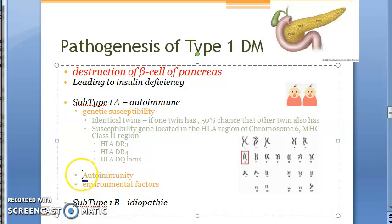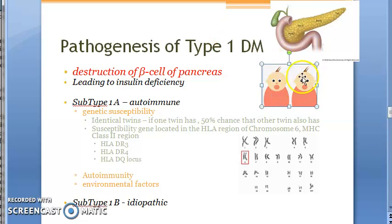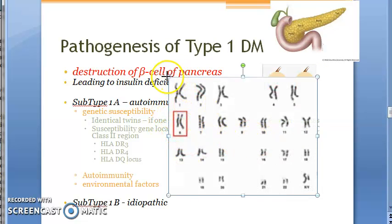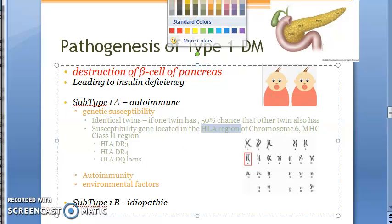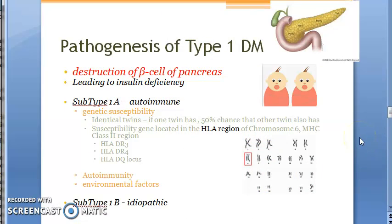For subtype 1a, there are three things: genetic susceptibility, autoimmunity, and environmental factors. Regarding genetic susceptibility — with identical twins, if one twin has type 1 diabetes mellitus, the other has a 50% chance of also having it. Chromosome 6 has the HLA region, which contains the MHC class 2 region, where a susceptibility gene is located that predisposes to type 1 diabetes mellitus.